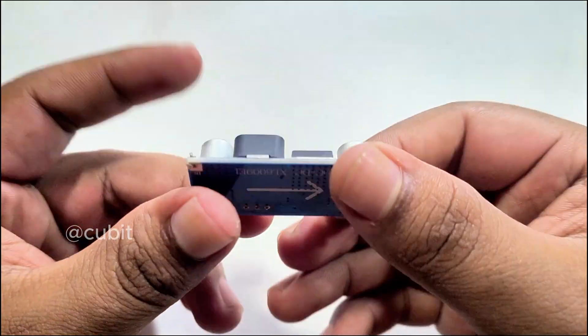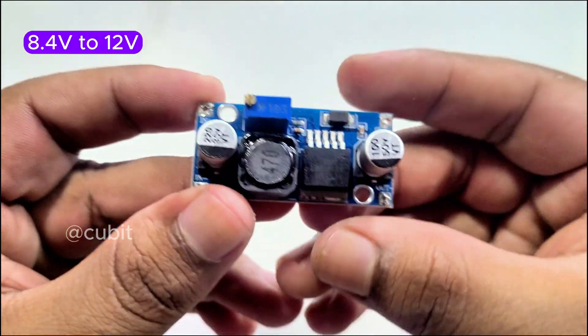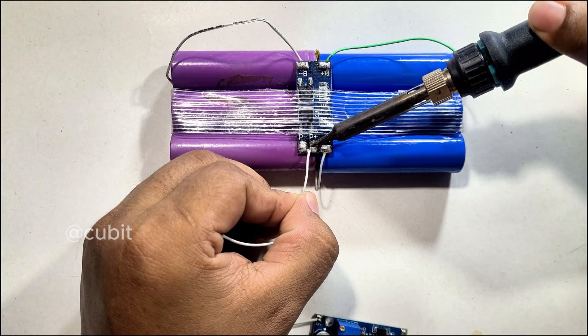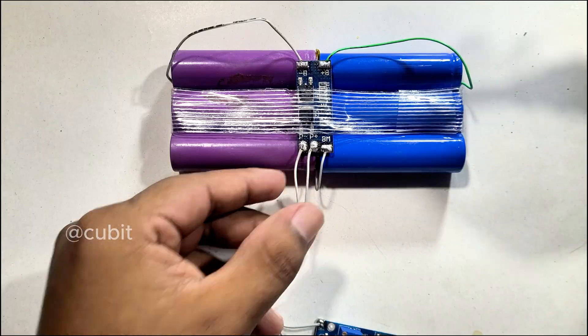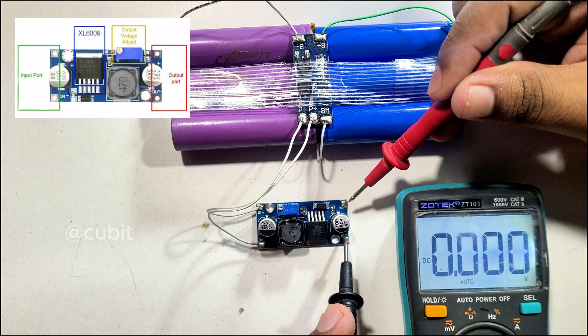Here we are using the XL6009 to boost the voltage from 8.4V to 12V because my ONU is 12V. We set the output voltage of the XL6009 to 12V by adjusting the potentiometer.